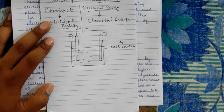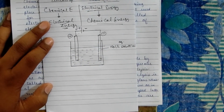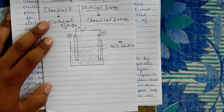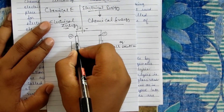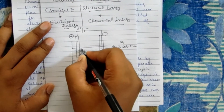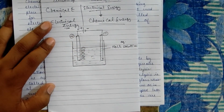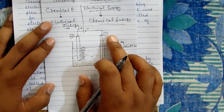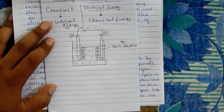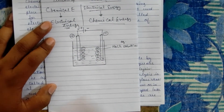This electrode connected to the positive terminal will be positively charged, and this electrode connected to the negative terminal will be negatively charged. I will now tell you their names. The negatively charged ions in the electrolytic solution will be attracted toward the positively charged electrode, and the positively charged ions will be attracted toward the negatively charged electrode, because opposite charges attract each other.